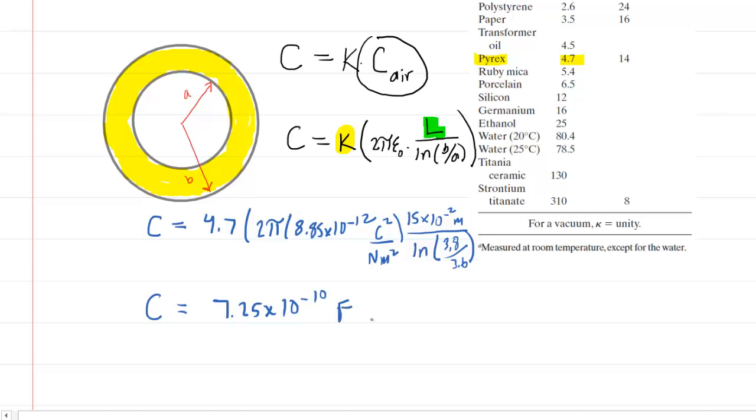If your homework system requires you to convert that into nanofarads, then you recall that 1 nanofarad is 10 to the minus 9 farads. You would take this answer and divide it by 10 to the negative 9, and you would get about 0.73 nanofarads. You could express your answer in nanofarads or farads. Those are the answers to part A.